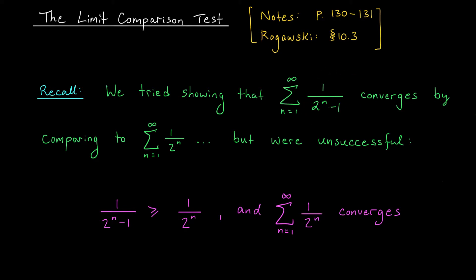Hence, this term and this term should be essentially indistinguishable. Now since the series — the sum from 1 to infinity of 1 over 2 to the n — converges (it's a convergent geometric series), maybe it makes sense that this series should converge as well. We tried to show this formally using the comparison test, but unfortunately we were unsuccessful.